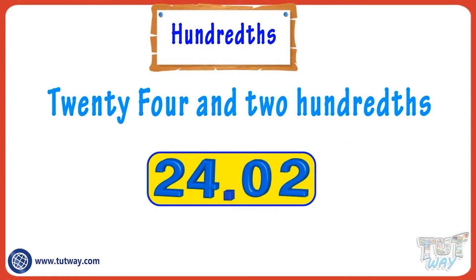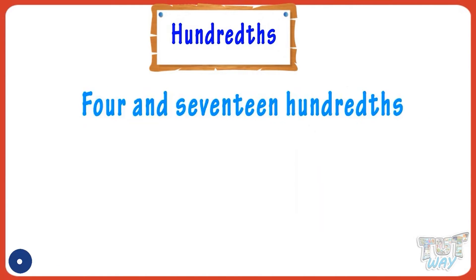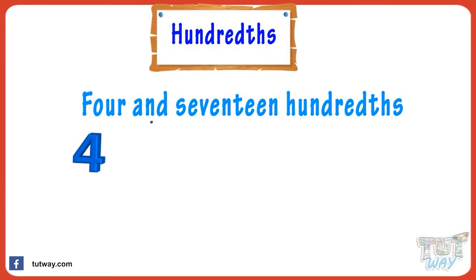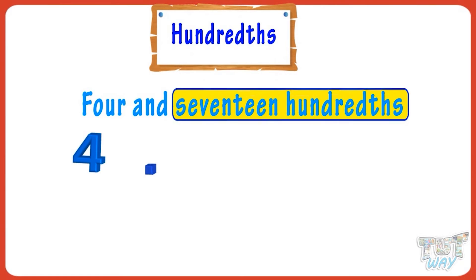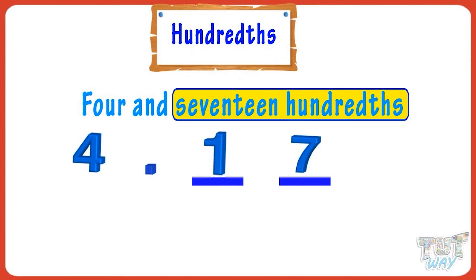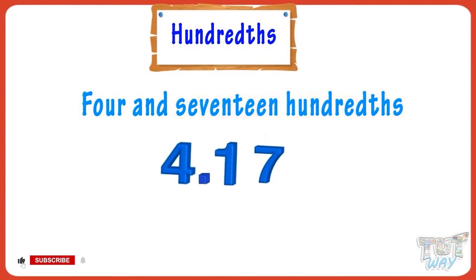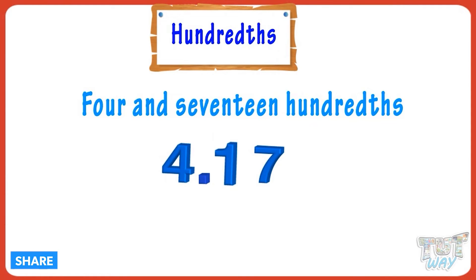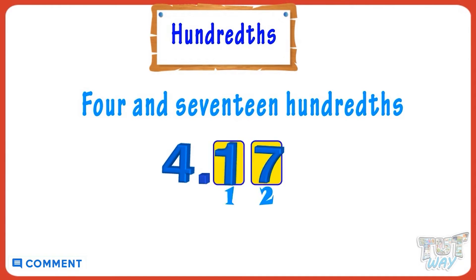Now let's write four and seventeen hundredths. First write four. We know 'and' means decimal point, so put a decimal. Seventeen hundredths means there are two digits after the decimal point, so write four point seventeen. Kids, we learned that when it's hundredths, there are two digits after the decimal point, and the last digit must not be zero.